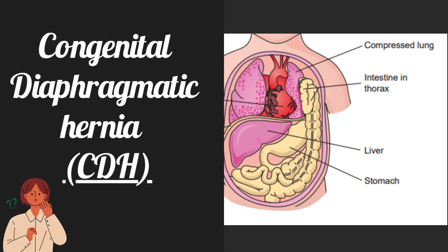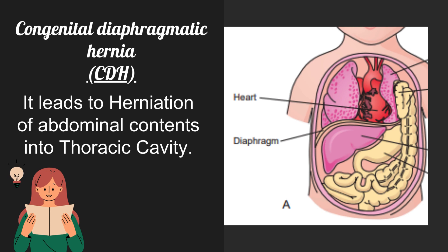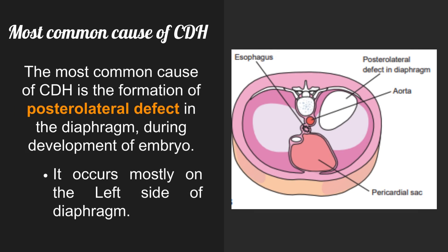Congenital Diaphragmatic Hernia, also known as CDH, leads to herniation of abdominal contents into the thoracic cavity. The most common cause of CDH is the formation of a posterolateral defect in the diaphragm during development of the embryo. It occurs mostly on the left side of the diaphragm.